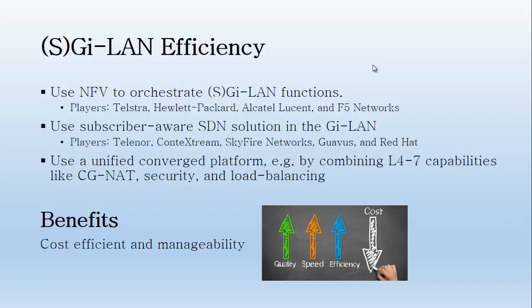There are key players in the market today who are already looking into this, like Telstra, HP, ALU, and FF Networks. They have some ongoing activity for use cases in order to use NFV to orchestrate SGI LAN. Secondly, you can actually use a subscriber-aware SDN solution on the GI LAN, meaning you can begin to think of network slicing. Here you have different content based on software-defined networks being utilized towards the GI LAN, with players like Telenor, Conte Extreme, Skyfire Networks, and Red Hat working on activities for this use case.